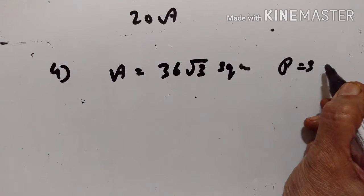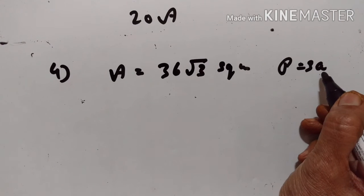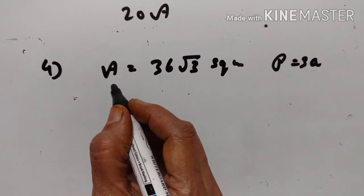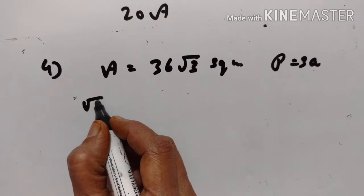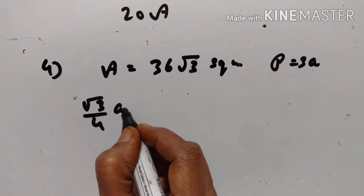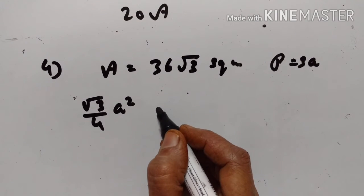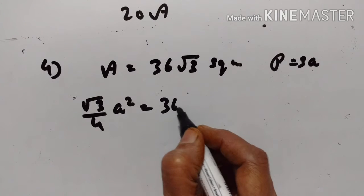Perimeter equals 3A, where A is the side. The formula for the area of an equilateral triangle is (√3/4)A², where A is the side of the triangle, which equals 36√3.